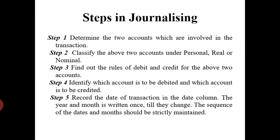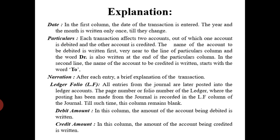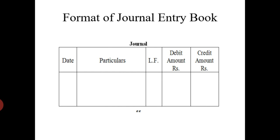This is most important: when you are passing the entry in the book of account, at the end you add the debit amount and the credit amount and they should be equal to each other. The debit amount total should equal the credit amount total — that shows all the transactions you have passed are correct.